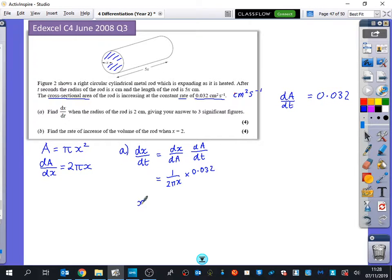But they have told us that we want to find it out when the radius of the rod is 2 centimetres. So x is equal to 2. So it's 1 over 4 pi multiplied by 0.032, which I believe gives you 0.00255. OK, hang on a second. Units here for dx dt. Excellent. Centimetres per second. And that's to three significant figures. OK, that's part A of the question that we've got.